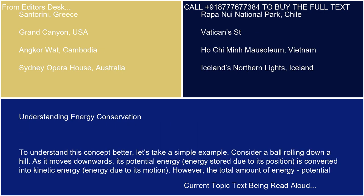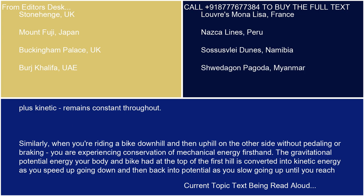To understand this concept better, let's take a simple example. Consider a ball rolling down a hill. As it moves downwards, its potential energy — energy stored due to its position — is converted into kinetic energy, energy due to its motion. However, the total amount of energy, potential plus kinetic, remains constant throughout.